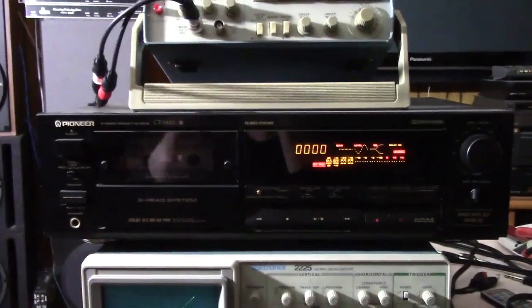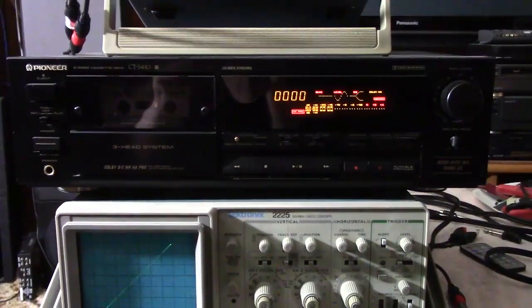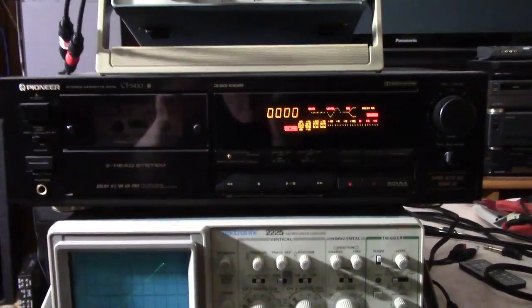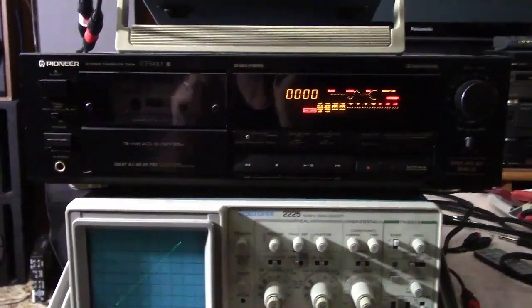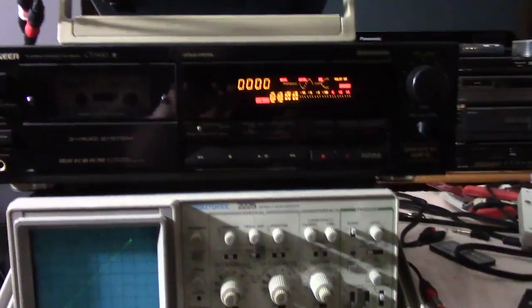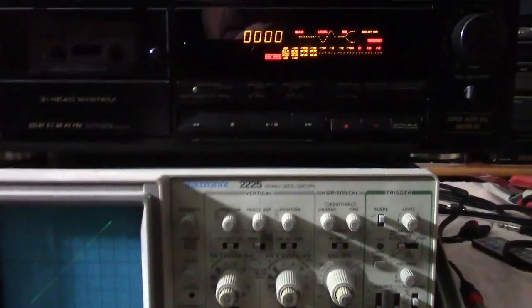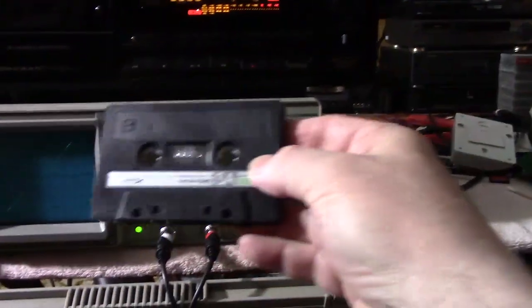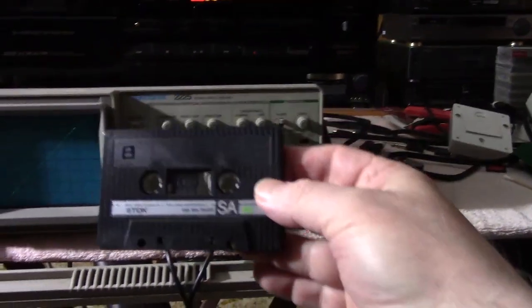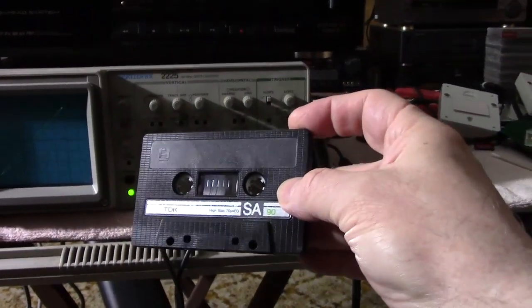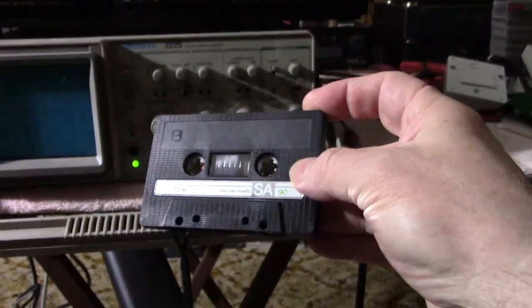What I'm going to do now is take this deck out of the system and put in my Tascam 122 Mark III. I'm going to use the tape that I recorded on this machine, this TDK, as the reference alignment cassette. We're going to see where the Tascam deck holds up.